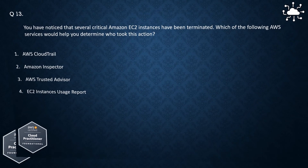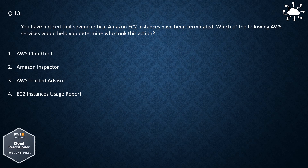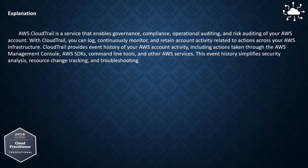Question 13. You have noticed that several critical Amazon EC2 instances have been terminated. Which of the following AWS services would help you determine who took this action? 1. AWS CloudTrail, 2. Amazon Inspector, 3. AWS Trusted Advisor, 4. EC2 Instances Usage Report. The correct answer is AWS CloudTrail. AWS CloudTrail is a service that enables governance, compliance, operational auditing,